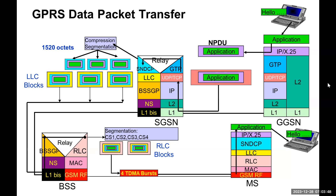There is also a possibility of fragmentation at this layer depending on the maximum transmission unit size. This NPDU with all its headers is transported over the physical layer of the Gn interface. The Gn interface is the interface between the SGSN and GGSN. At the SGSN, after removing all the headers, the NPDU is relayed to the SNDCP.